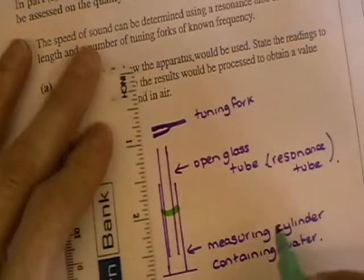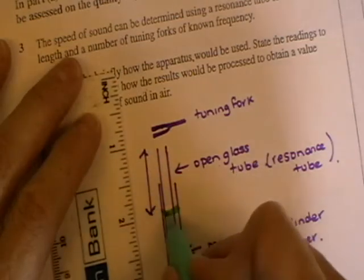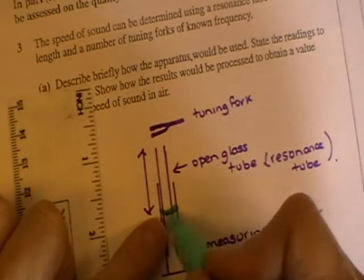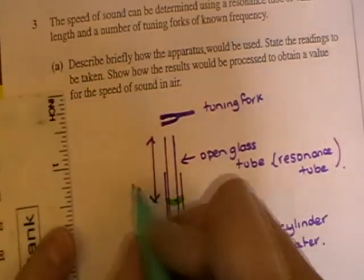And then this is a measuring cylinder containing water. And what you could put in there too is you could put in the length between the top of the tube and the top of the water. Once you get there that's the length of tube that you're talking about. So we call it L.